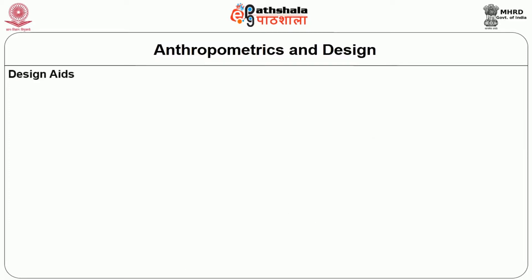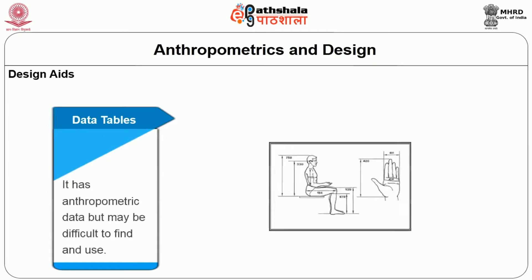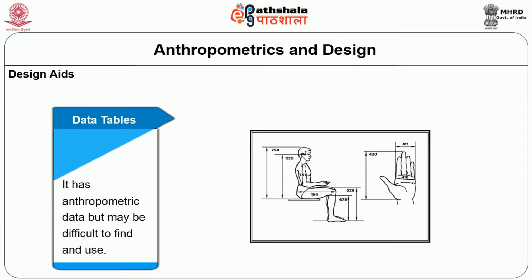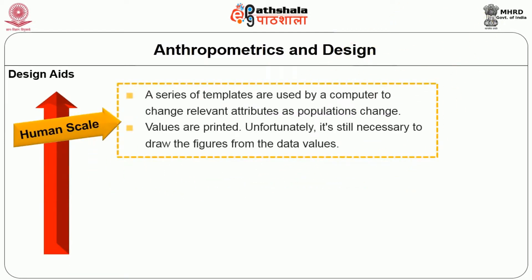The next concept is design aids, beginning with data tables. Data tables are a set of anthropometric data, but they can be difficult to find and use. The second aid is the human scale — a series of templates used with a computer to change the relevant attributes as the population changes. Values are printed, but it is still necessary to draw figures from the data values.